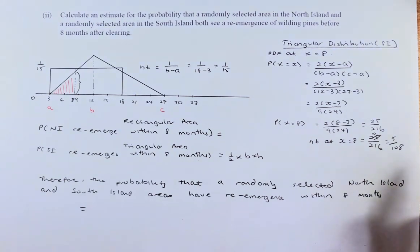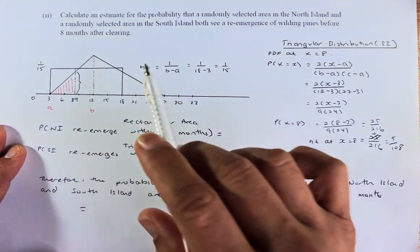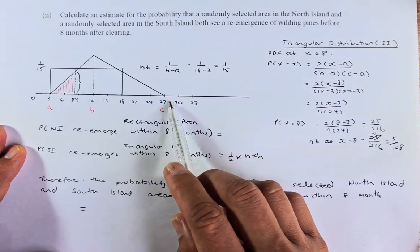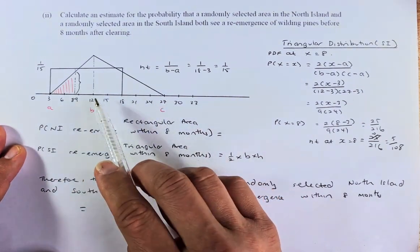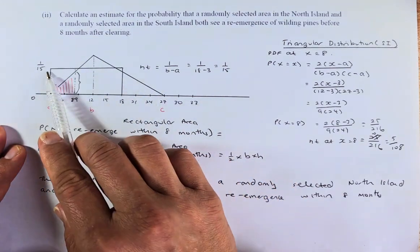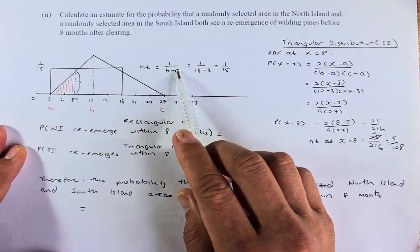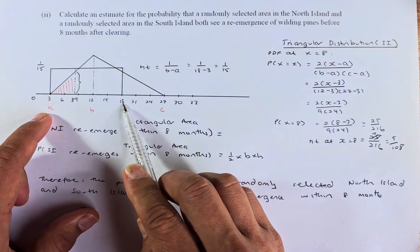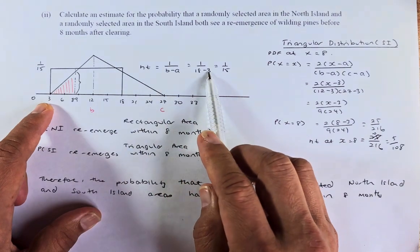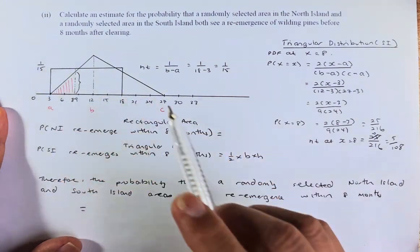Calculate and estimate for the probability that a randomly selected area in the North Island and a randomly selected area in the South Island both see re-emergence of wilding pine trees before 8 months after clearing. This is the graph reproduced from part 1 — it's going to be 3 to 27 for the triangular distribution, and the highest point is at 12. For the rectangular distribution, it's going to be 3 to 18, and we calculate the area under the curve. To find the height, the formula is 1 over (B minus A). The highest point B is 18, lowest point A is 3, so 18 minus 3 gives us 15, so the height is 1 over 15.